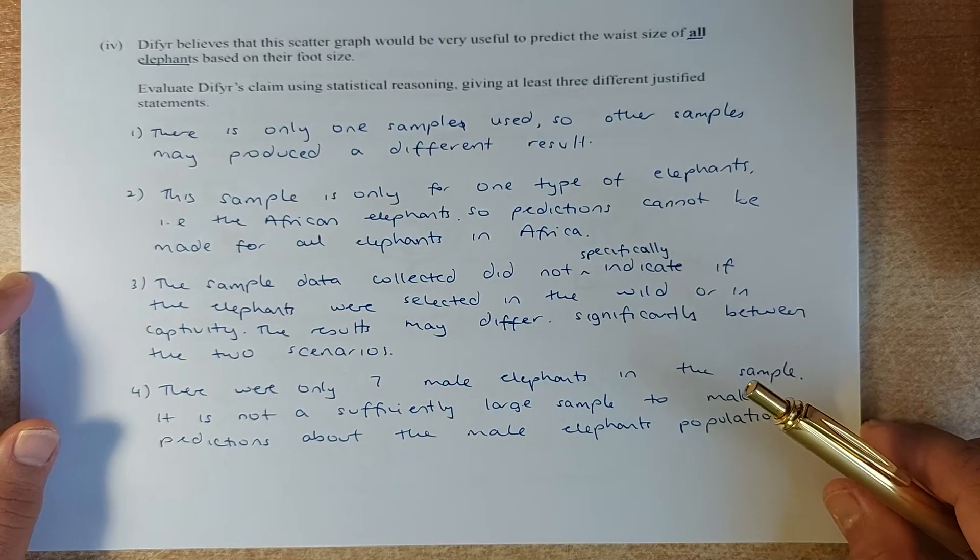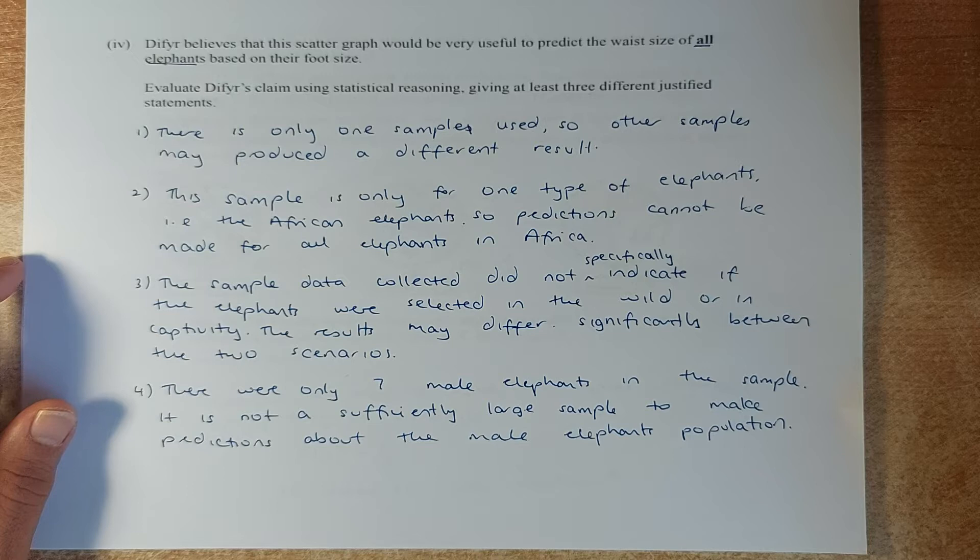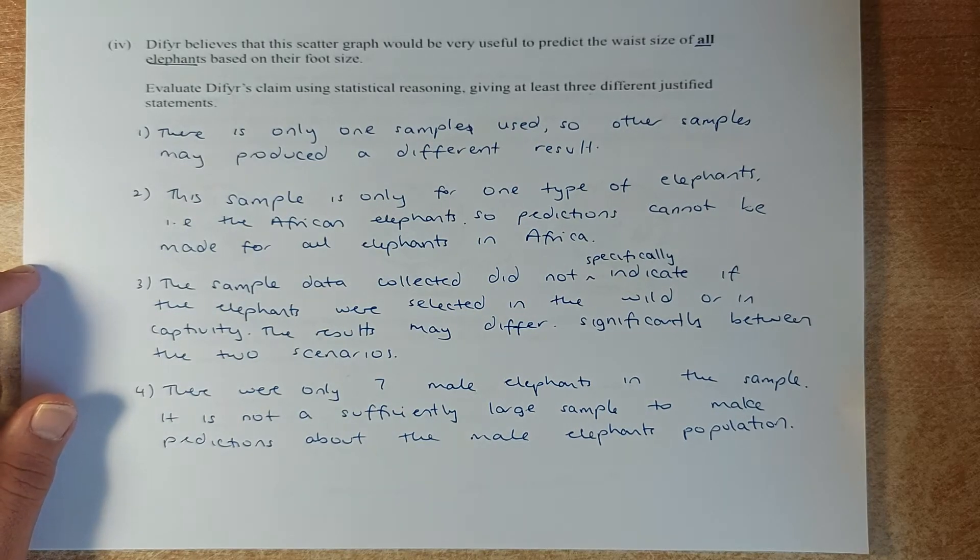Now we're going to answer the excellence question. Defail believes that the scatter graph would be useful to predict the waist size of all elephants based on their foot size. Evaluate Defail's claims using statistical reasoning, giving at least three different justified statements. So we shall look at it.